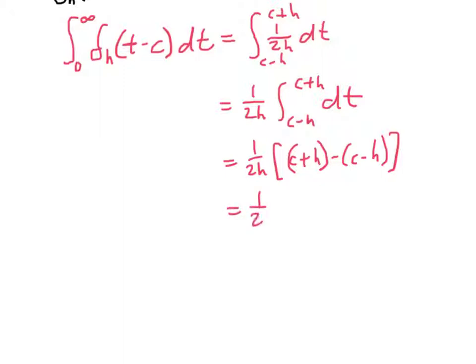And if you think through the arithmetic there a little bit, we have 1 over 2h, and then there's going to be a c minus a c, which will be zero, and then h minus negative h, so times 2h, which of course then the 2h is cancel and we just get 1.